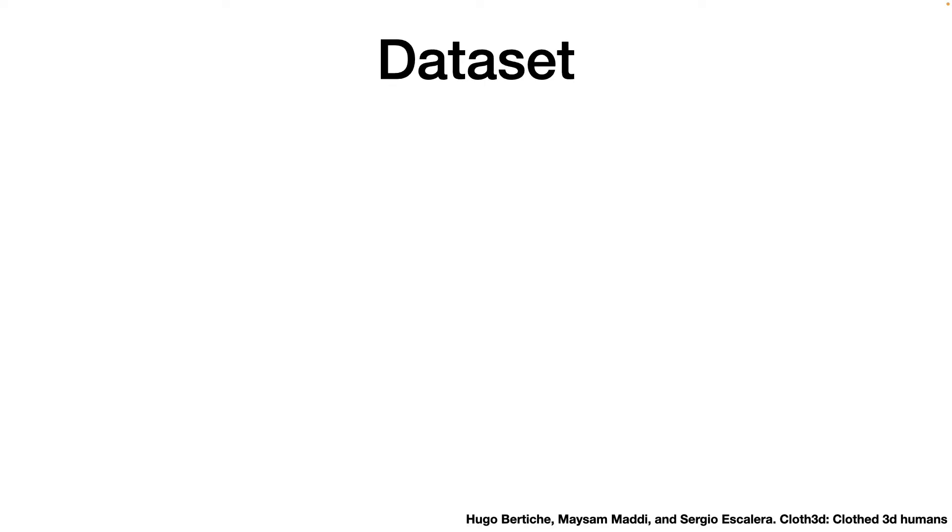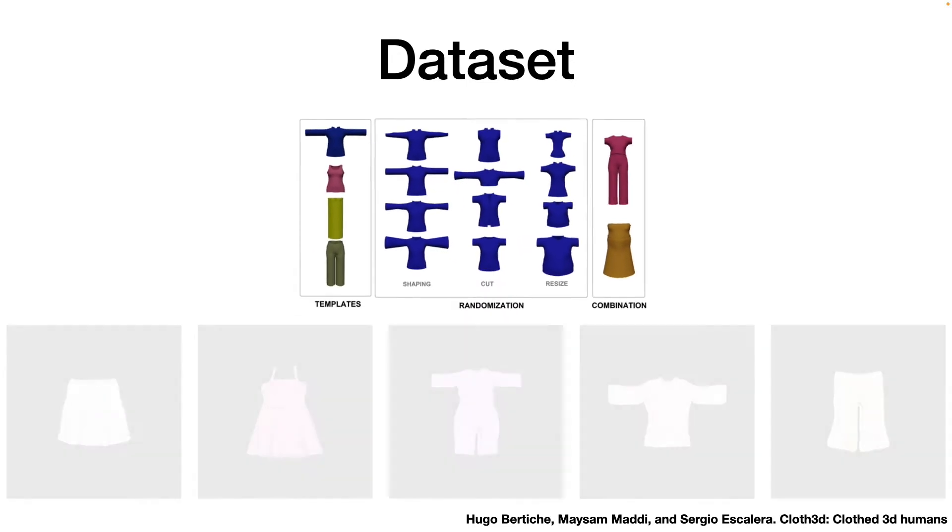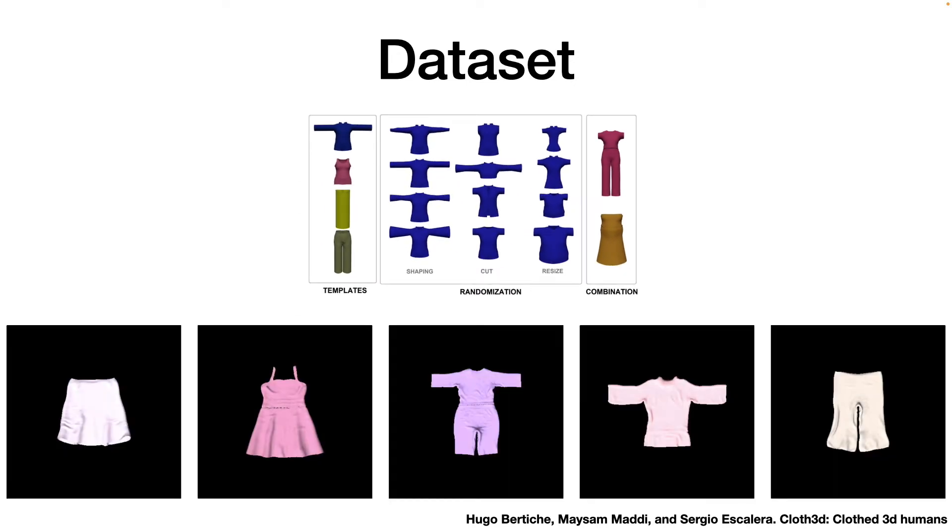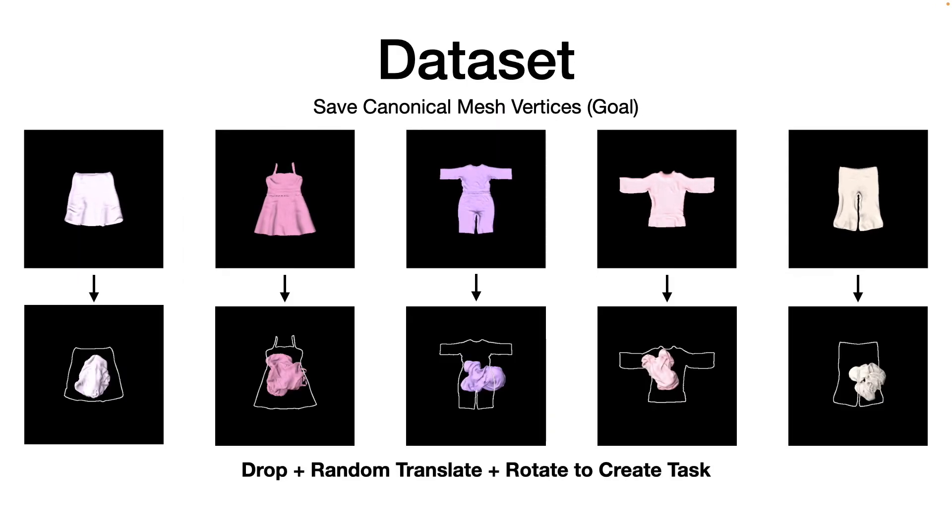Now, how do we get this canonicalization goal in the first place? Turns out the cloth 3D dataset already contains garments in the canonical pose. So, we just load these meshes into the PyFlex simulation environment, save out the current pose as the goal, we drop the cloth, and then we randomly transform it in order to create our tasks.